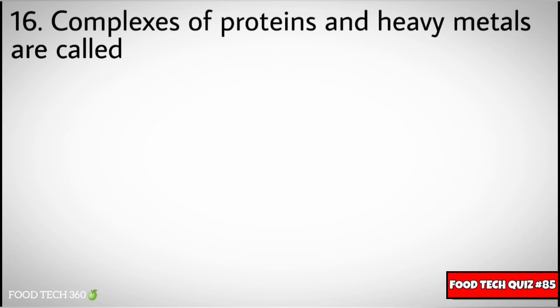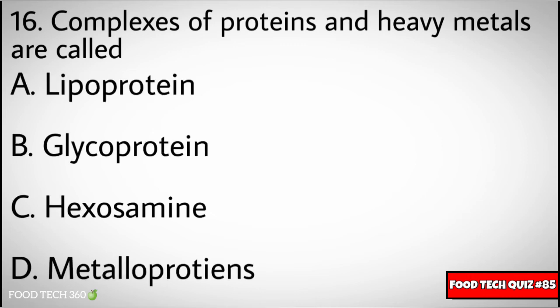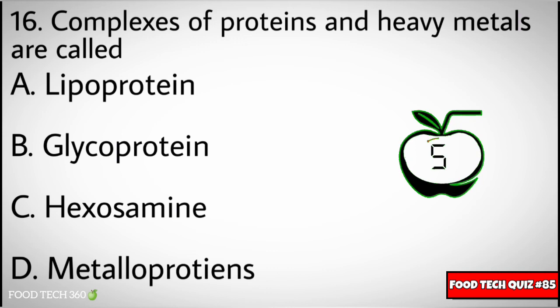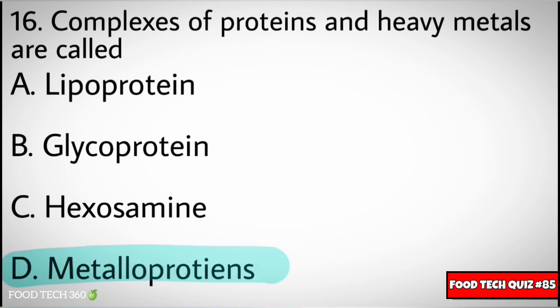Question number sixteen: complexes of proteins and heavy metals are called. Options: A) lipoproteins, B) glycoprotein, C) hexosamine, D) metalloproteins. Correct answer: D) metalloproteins.